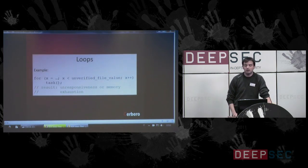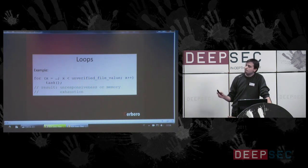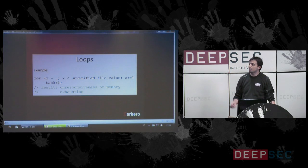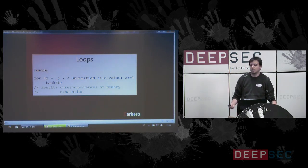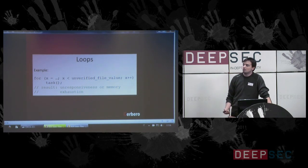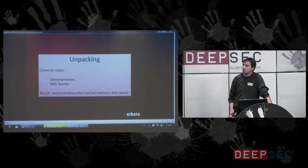Then we have loops — this is very common. We take a numeric value from the file, put it in a loop, and without verifying if the value is too big, if the function called by the loop allocates memory and such, it will exhaust memory. Or the application becomes unresponsive.